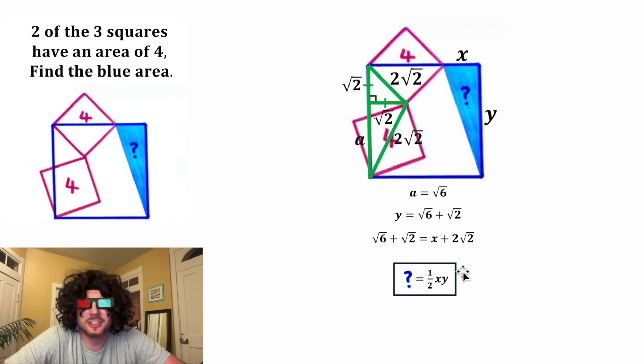In the place of this Y, let's plug in root six plus root two. And then to solve for X, we can subtract two root two from both sides. On the left-hand side, one root two minus two root two is negative root two. And then on the right-hand side, these will cancel each other out. And now we have the value for X.